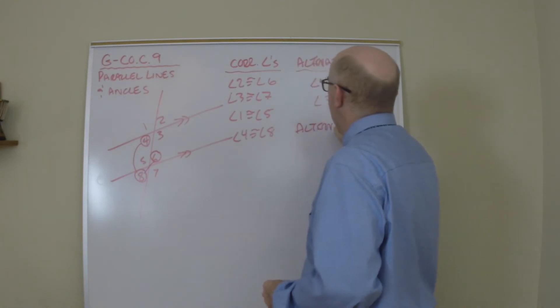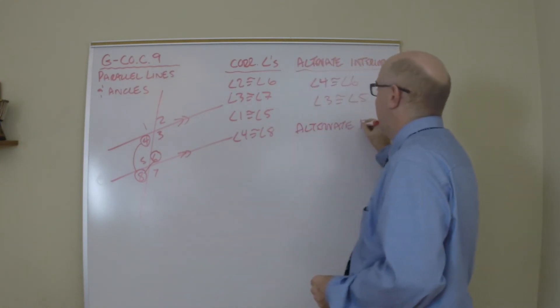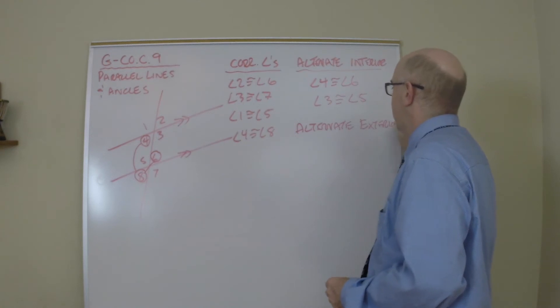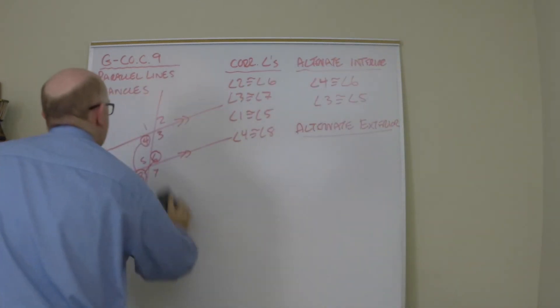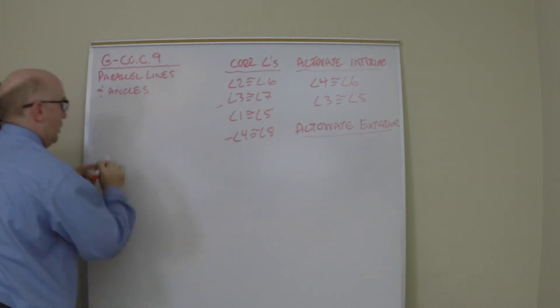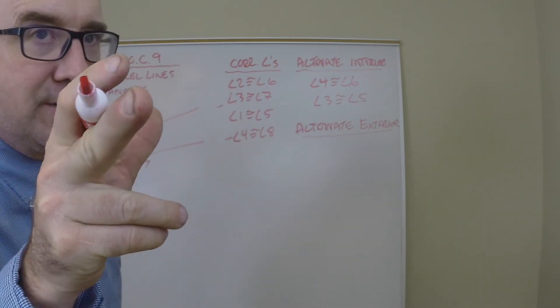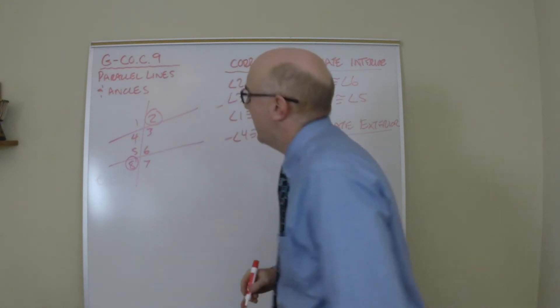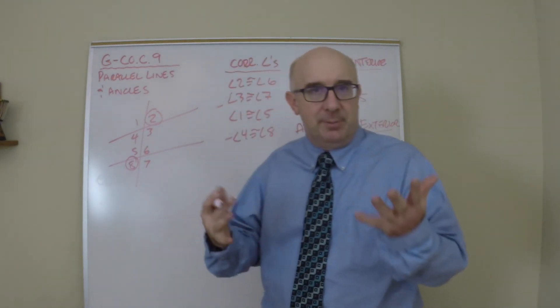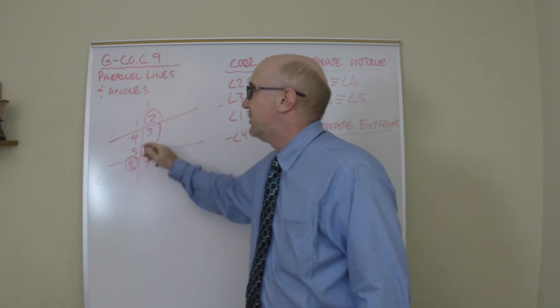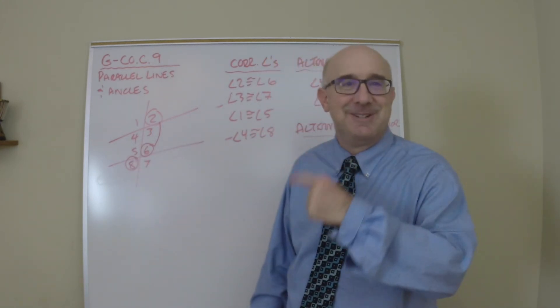Another set: alternate exterior angles. Alternate exterior are the ones on the outside, like angle 2 and angle 8—they're alternating and exterior. A good eye might say those look equal as well, so let's try a proof verbally.